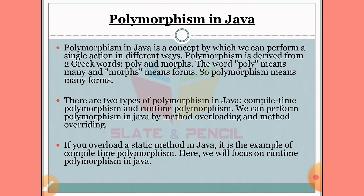Polymorphism in Java is a concept by which we can perform a single action in different ways. We have a shape drawing in the program as an example of this.